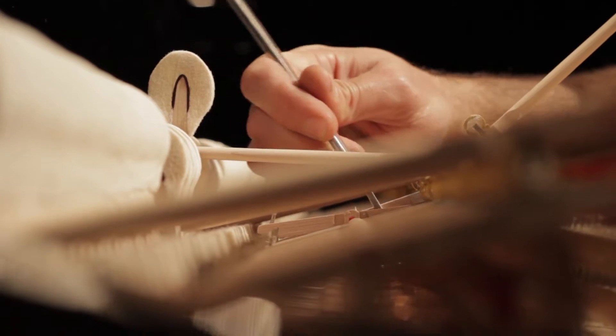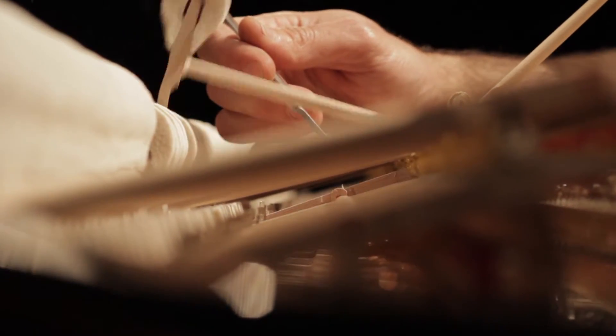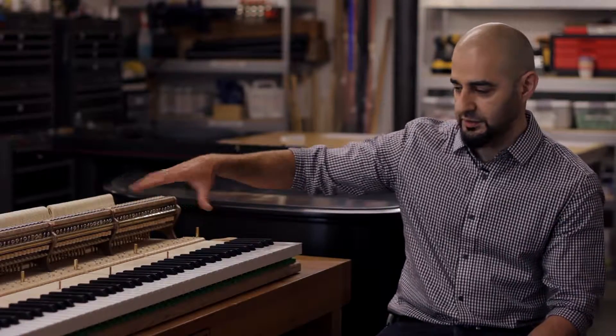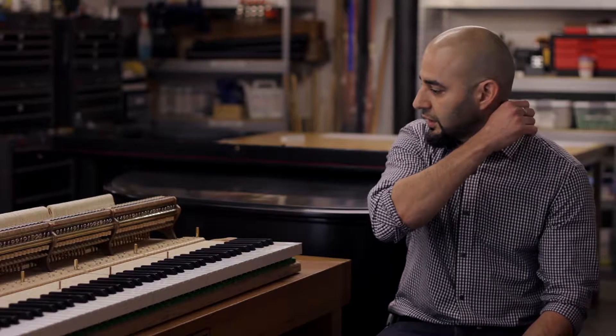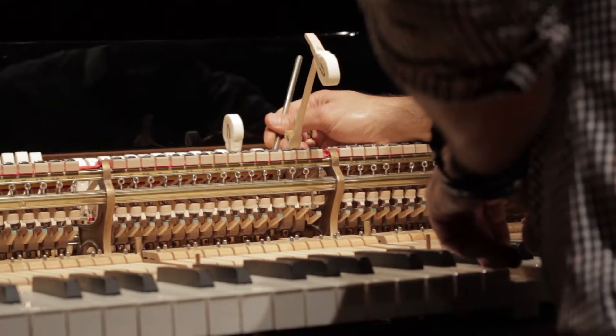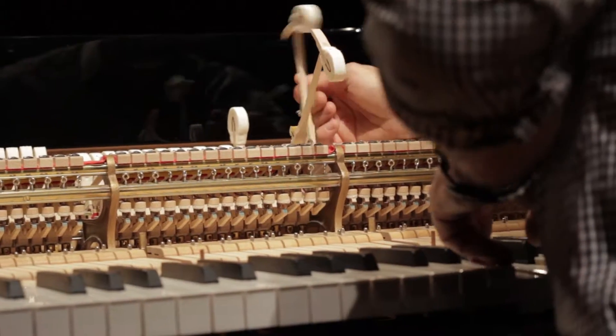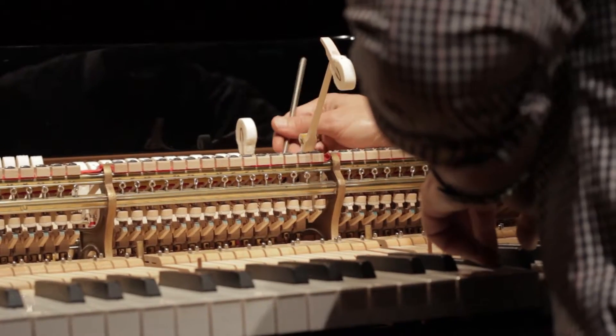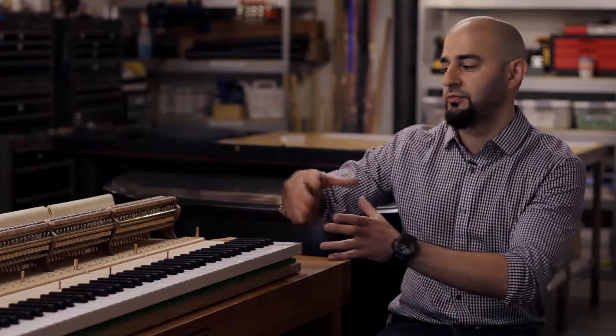The most complex thing about the piano would be the action, which is what we call this component right here. So it's roughly 9,000 moving parts. When a key moves from the time a pianist touches a key and the hammer hits the string, the average would be about 45 to 50 components per key.